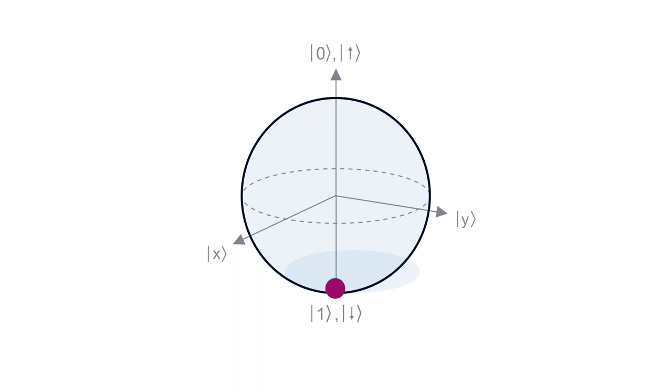Examples of such sequences are the CP and the CPMG sequences. In these sequences, we apply, in between the two pi-over-2 pulses, additional pi-pulses, at specific times. The situation where a single pi-pulse is applied is called a Hahn echo.